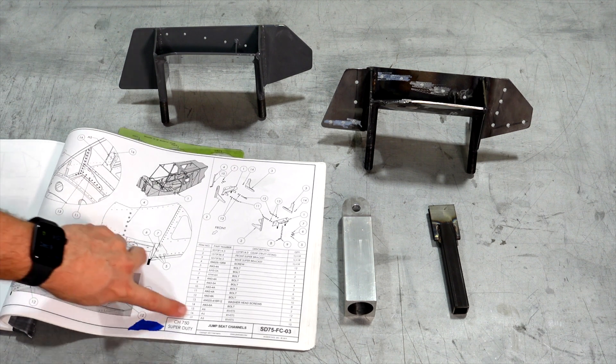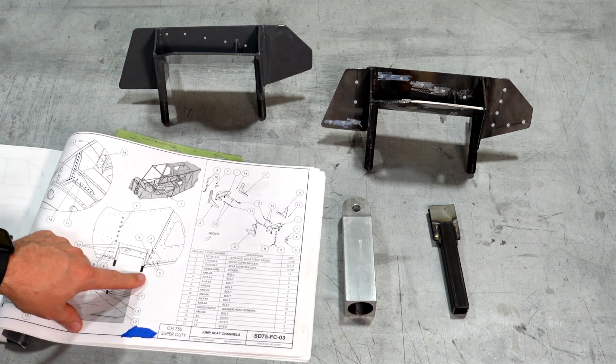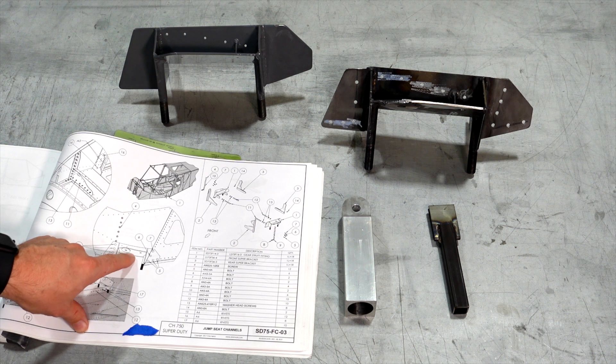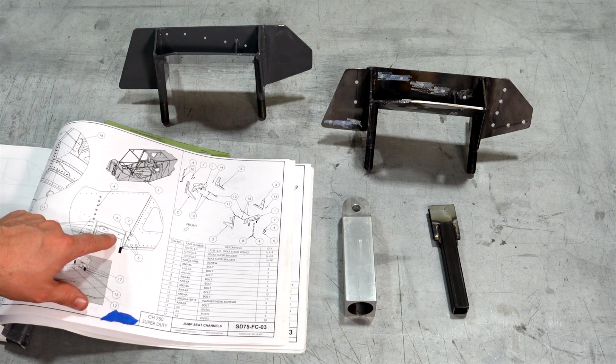This is the only drawing, SD75FC03, that shows the gear leg brackets. And I noticed that on here we had this washer, what looks to be a washer, but what that actually is, is a welded on washer.